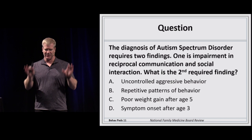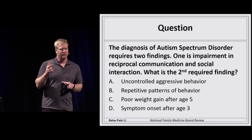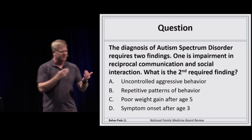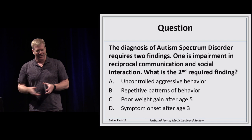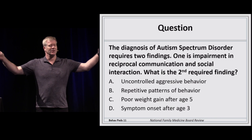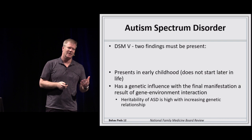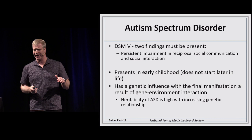For autism spectrum disorder — and this is not related to vaccines — the DSM-5 diagnostic criteria require two findings. One is impaired reciprocal social communication, and the other is persistent repetitive patterns of behavior. It presents early in life and is not something that develops later. There is thought to be a genetic influence, though the exact cause is unknown.